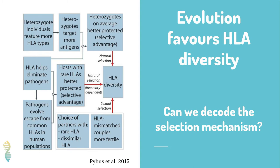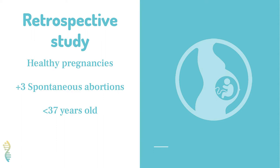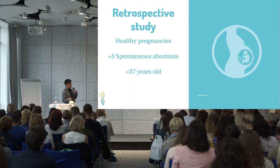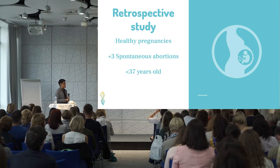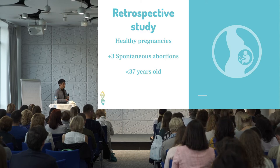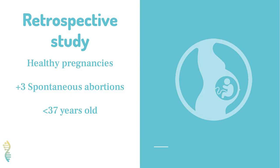What we are trying to do at Emine Compass is decode the selection mechanism. We use information from a study that includes couples with healthy pregnancies and couples that have had more than three spontaneous abortions and were under 37 years old. We did this process in two steps — the first is feature extraction: finding the relevant information.